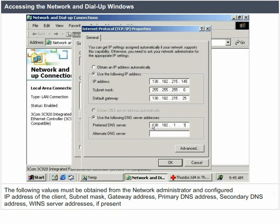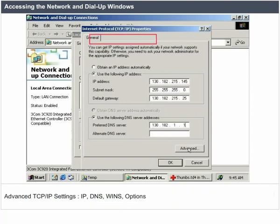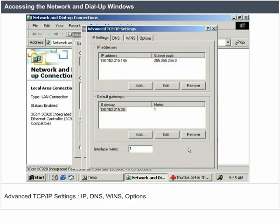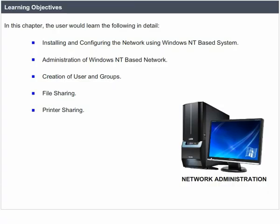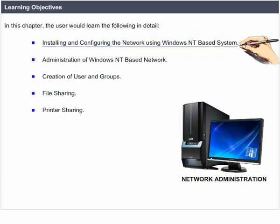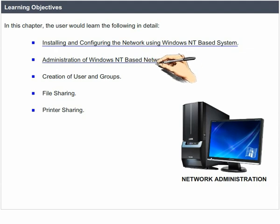Advanced TCP/IP settings include IP, DNS, WINS, and options tabs. Network administration learning objectives: in this chapter, the user would learn the following — installing and configuring the network using Windows NT-based systems, administration of Windows NT-based networks, creation of users and groups, file sharing, and printer sharing.